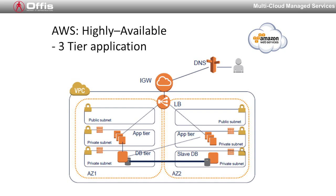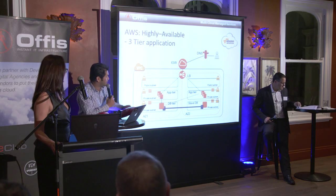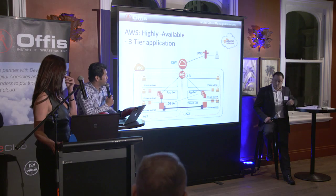The next slide is about high availability. Amazon's philosophy is: when you build an environment, build it for failure. Don't count on availability because they don't guarantee uptime — besides S3, Glacier, and managed applications. EC2 uptime is not guaranteed beyond the host itself. In this topology, you're talking about two availability zones, multiple subnets, and a lot of security groups.